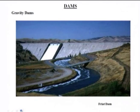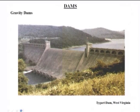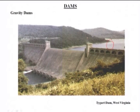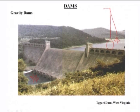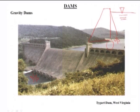Examples of gravity dams include the Firth dam and one in West Virginia in the US. In India also gravity dams exist. Looking at the cross section: on one face is the upstream side with the water reservoir stored there, and the other side is the downstream side.